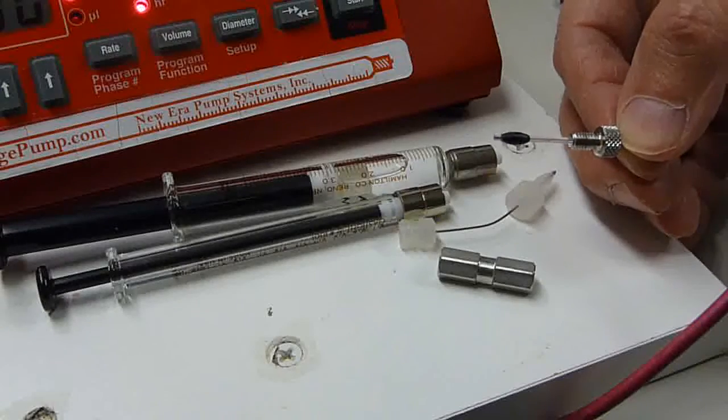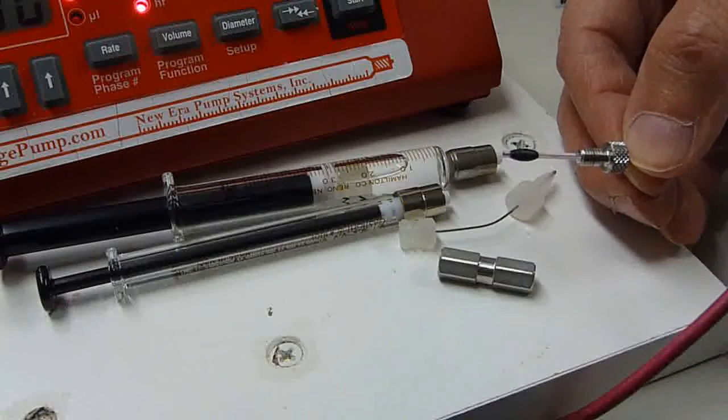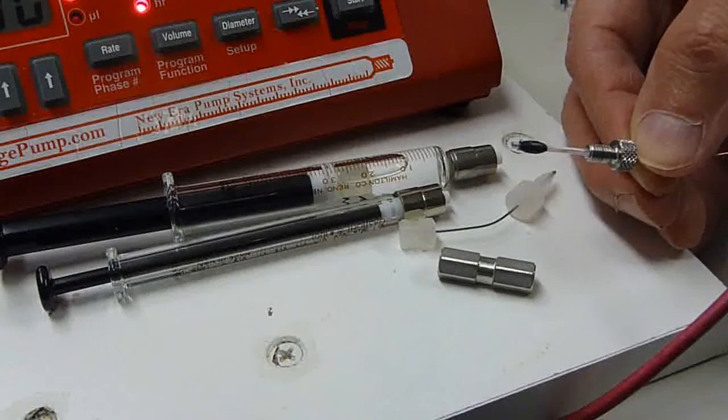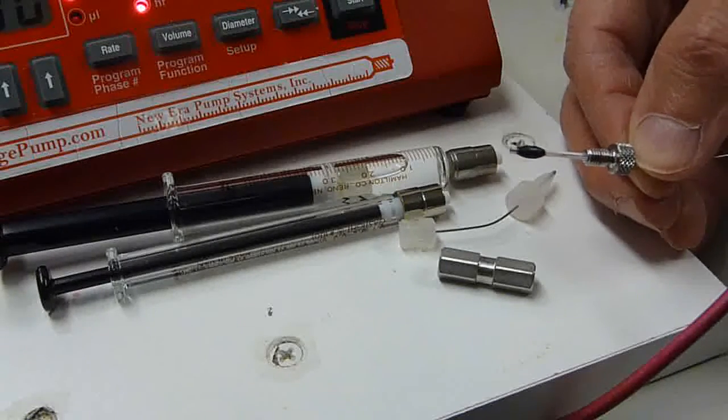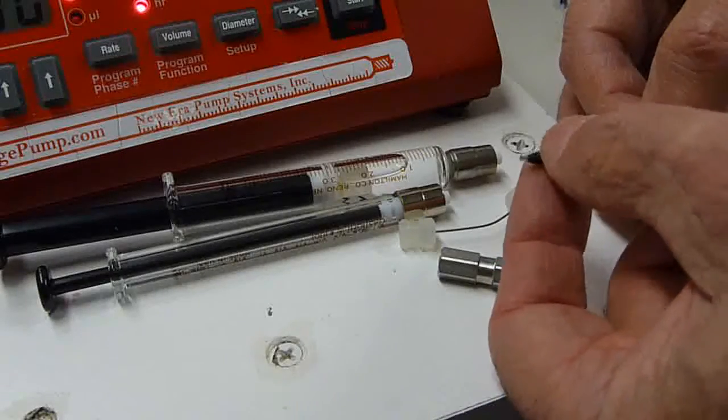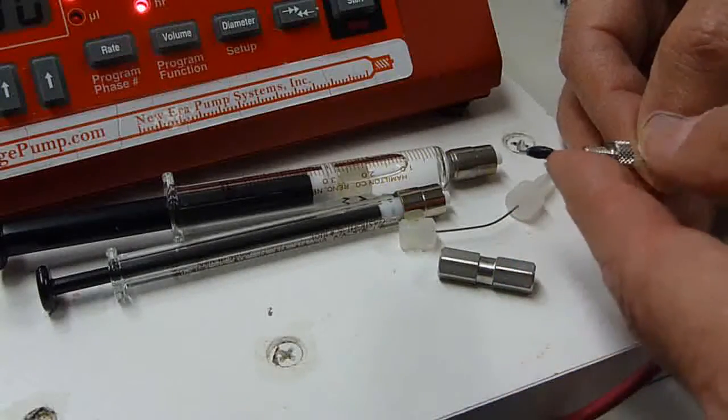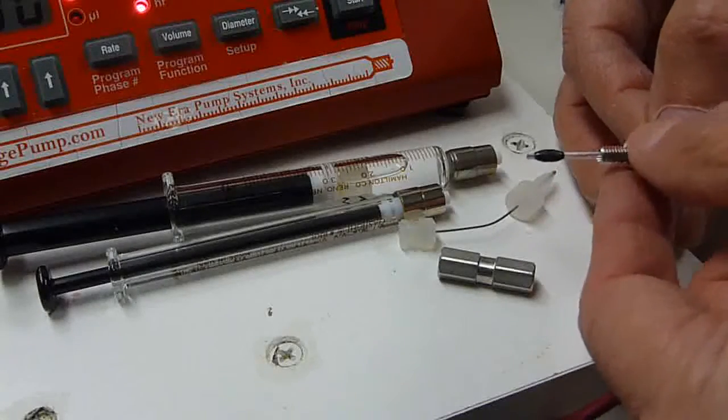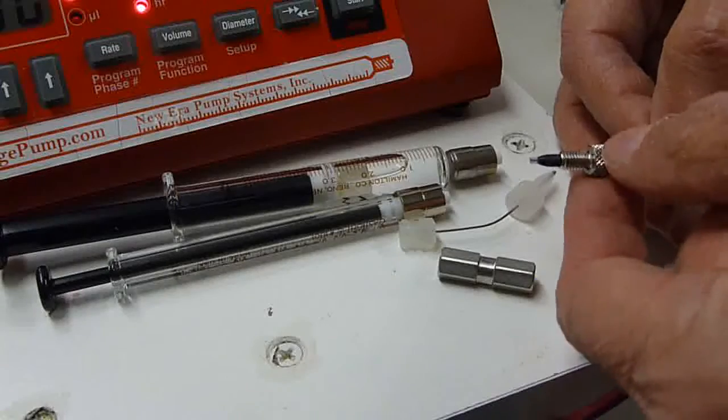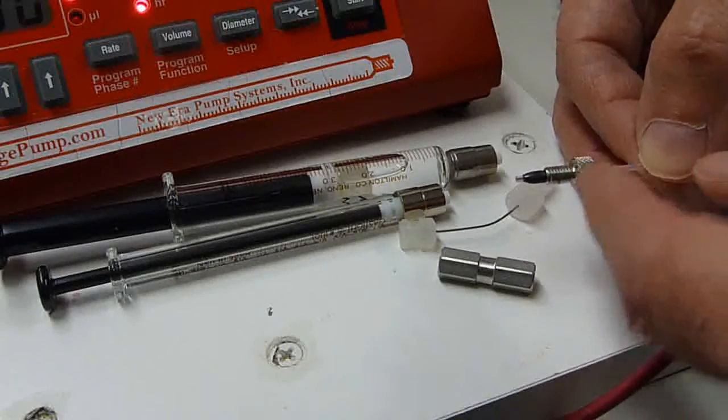Fused silica is 360 micrometers outside diameter. Inside diameter I like 150, 100 microns. And then this is a ferrule double sided ferrule. And then this is a nominal finger tight stainless steel fitting.